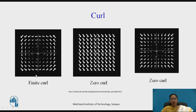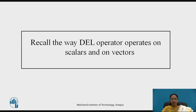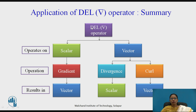Circular rotation indicates finite curl, while no change indicates zero curl. Inward motion alone does not indicate curl — only circular rotation does. To summarize: del operating on a scalar gives gradient, resulting in a vector. Del operating on a vector with a dot gives divergence, resulting in a scalar. Del operating on a vector with a cross gives curl, resulting in a vector.